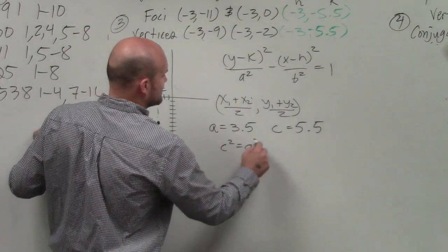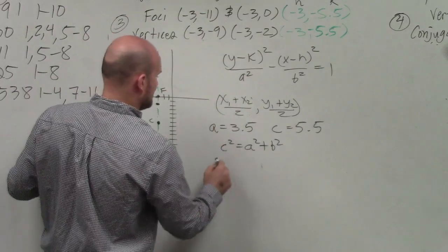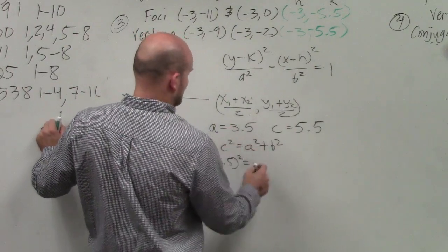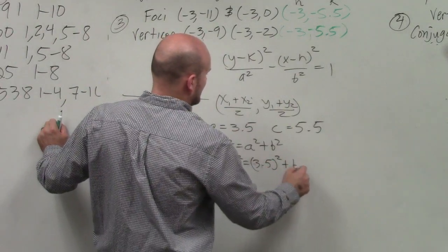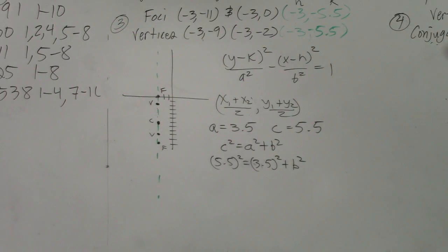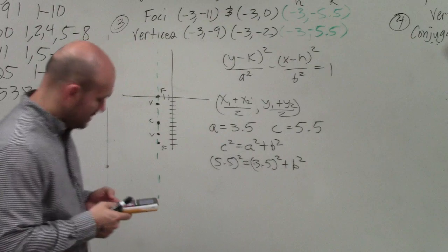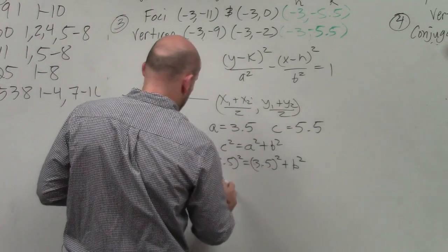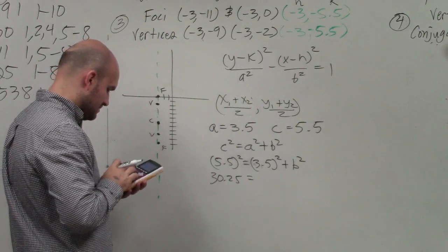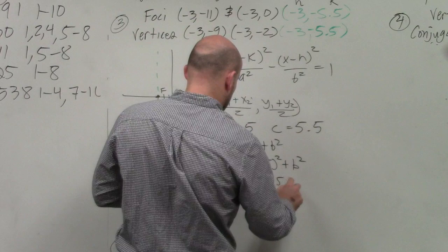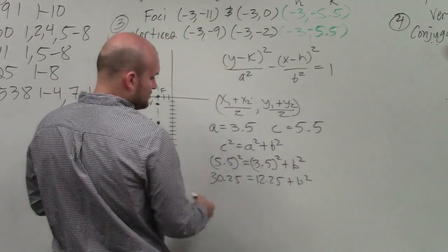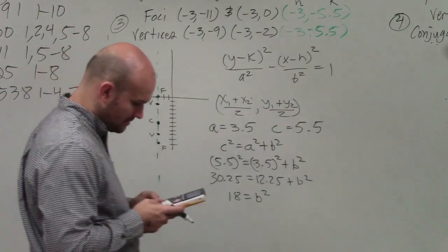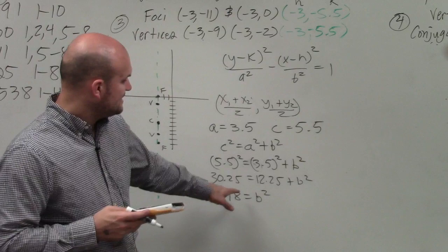Therefore I can say c squared equals a squared plus b squared. So we have c squared, which is 5.5 squared equals a squared, which is 3.5 squared plus b squared. Then I'll just go ahead and solve for b using my calculator. And I get 5.5 squared is 30.25, 3.5 squared is 12.25 plus b squared. And then you go ahead and subtract them, and you are going to be left with 18 equals b squared.